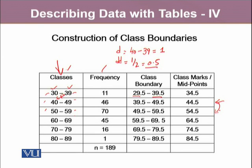Like if by any chance a value turned out to be 79.5, then we classify 79.5 into the second class.